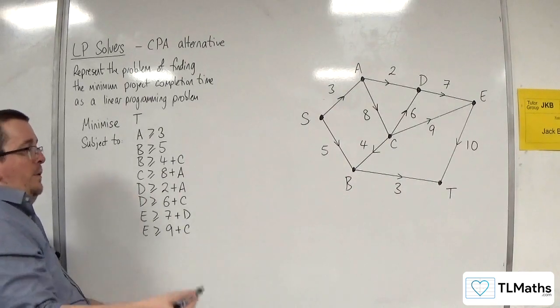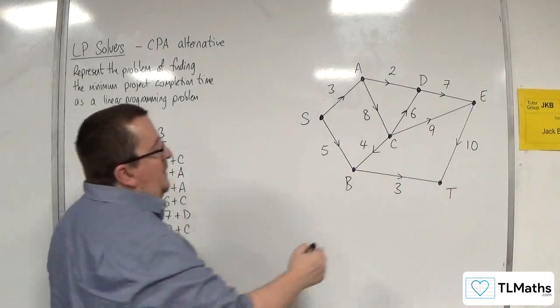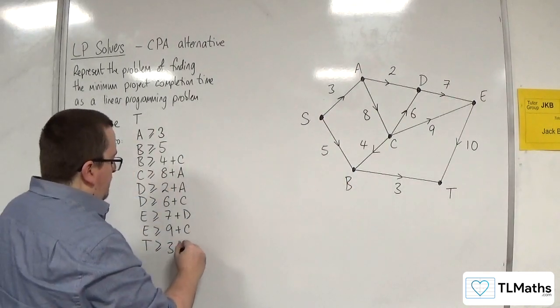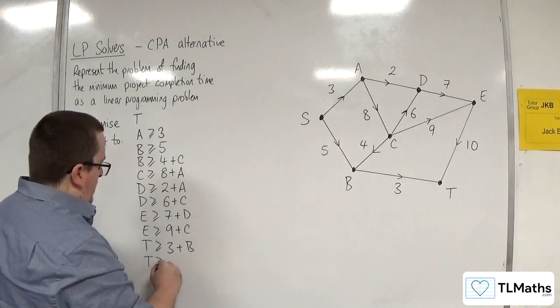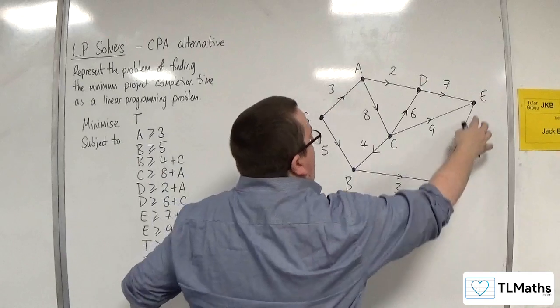We've exhausted all those. And then finally, we've got T. T must be at least 3 plus whatever is at B, and 10 plus whatever is at E.